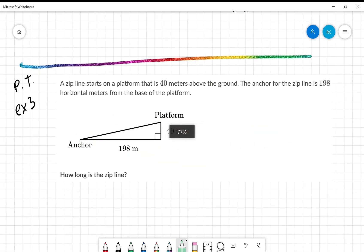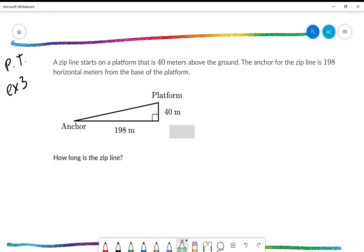Here we've got a zip line that starts on a platform that is 40 meters above the ground. The anchor for the zip line is 198 meters from the base of the platform. So this is approximately a two football field zip line. So that's pretty great. So the question is, how long is the zip line? So our distance D is right there. Once again, please take a moment. Pause the video. See what you can do. Ready, set, go.